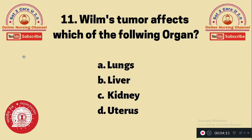Question 11: Wilms' tumor affects which of the following organs? A. Lungs, B. Liver, C. Kidney, D. Uterus. The most common organ affected by Wilms' tumor is option C — kidney.